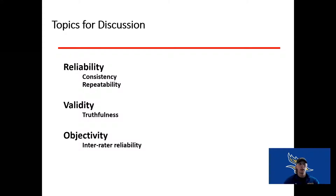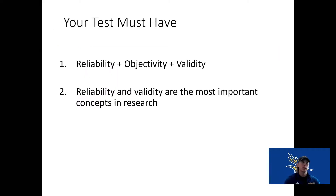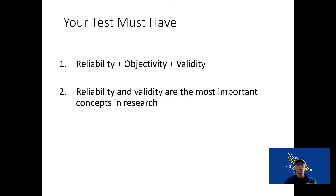Lastly, objectivity — this is how reliable we can be within different observers. Am I going to score a test the same as someone else? The skill and repeatability within individuals or between individuals who are giving or administering that test. We need reliability, objectivity, and validity to have a quality test or a quality measurement.